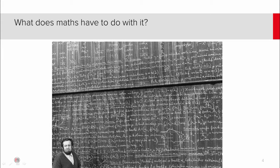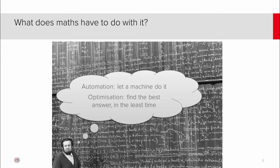You might ask yourself: what does maths have to do with that? What is a mathematics company doing in the design optimisation space? The key is to understand the distinction between automation and optimisation. Automation — we let a machine do it, and there are many systems that can do that. Optimisation finds you the best answer: the lowest cost design in the least amount of time. A by-product of optimisation is that you also get automation, and this unlocks the business process for you.